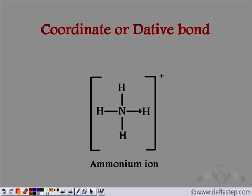Now we know that even in a covalent bond there is sharing of electrons, and even in a coordinate bond there is sharing of electrons. So what is the difference between the covalent and the coordinate bond? In the case of a covalent bond, there are two electrons — one electron of the hydrogen atom and one of the nitrogen atom, so both atoms share one electron each. But in the case of a coordinate bond, both electrons belong to the nitrogen atom. They are completely shared by the hydrogen atom as well, but hydrogen is not providing any electron — both electrons are provided by the nitrogen atom. So the difference is that in a covalent bond, electrons are provided by both atoms, whereas in a coordinate bond, electrons are provided by only one atom and shared by both atoms.